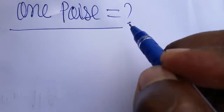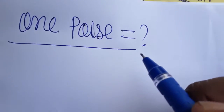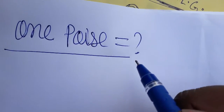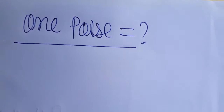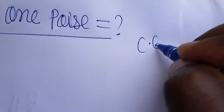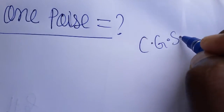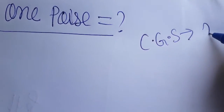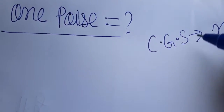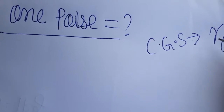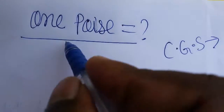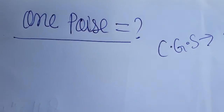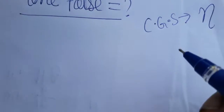Today we are going to learn what is one Poise. One Poise is a CGS system unit of coefficient of viscosity. When we are referring to the coefficient of viscosity unit in the CGS system, it is called one Poise.